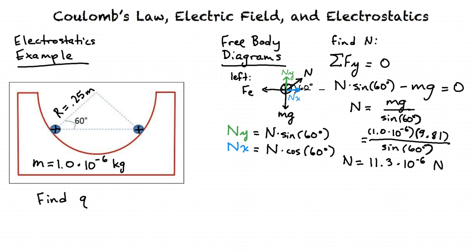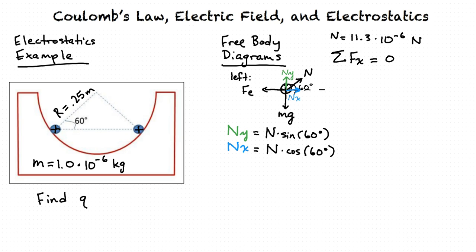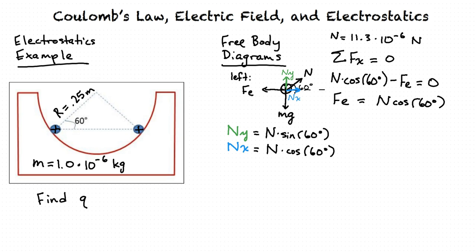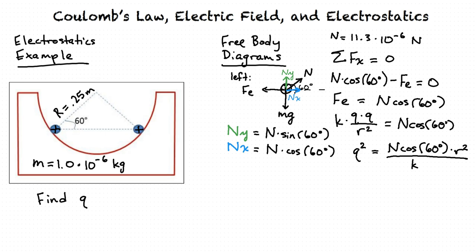Now we do a sum of forces in the x direction to solve for Q. The equation is N cosine(60°) minus Fe equals zero, so Fe equals N cosine(60°). From Coulomb's Law, Fe equals K times Q times Q over R squared. Multiplying both sides by R squared and dividing by K gives Q squared equals N cosine(60°) times R squared divided by K. Taking the square root: Q equals the square root of N cosine(60°) times R squared divided by K. We still need to find R, the distance between the two particles.